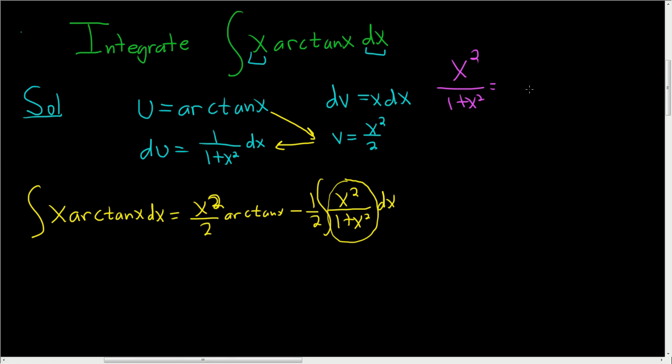We're going to add and subtract 1. So we can write this as x squared plus 1 over 1 plus x squared minus 1 over 1 plus x squared.